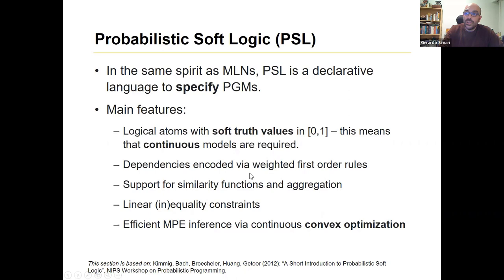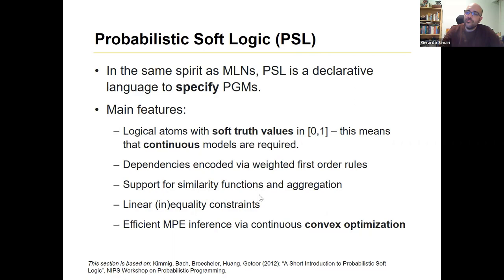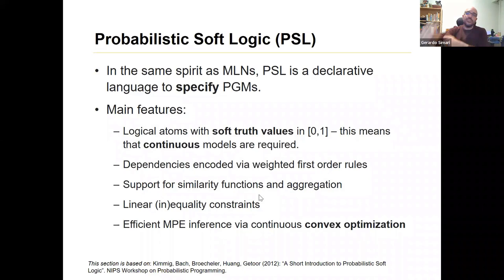As in MRFs, dependencies are coded via weighted first-order rules, and PSL has support for similarity functions and aggregation. If you look at the literature on PSL, the 'S' originally meant 'similarity,' because this was developed around 2008–2009 very much centered on reasoning about similarity of entities — for example, schema mapping where you say these two things are pretty well aligned so they're probably the same. But then they generalized it, and now it's called probabilistic soft logic, with more applications.